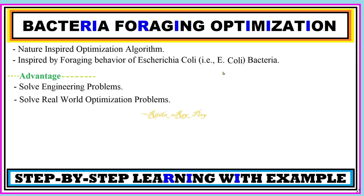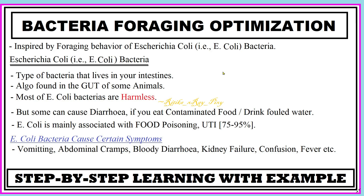Since this algorithm is inspired by the foraging behavior of E. coli bacteria, we will first discuss certain points about this bacteria. It is a type of bacteria that normally lives in our intestine and is also found in the gut of some animals. Most E. coli bacteria are harmless and keep our digestive tract healthy, but some can cause diarrhea if you eat contaminated food or drink. This bacteria is mainly associated with food poisoning, and around 75 to 95 percent of UTIs are caused by this bacteria.